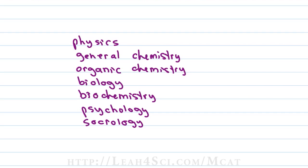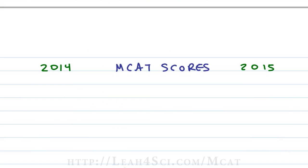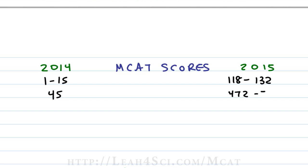The next important distinction is the scoring system. On the old exam, every section was scored between 1 and 15, with an average of about 9, and the total score was the sum of individual sections with a maximum of 45. The new exam is scored on a scale of 118 to 132 per section — ensuring the old and new exams can't be directly compared numerically. But if you do the math, 118 to 132 still gives you a 15-point scale. The new exam has an average of 125 per section, and the total score ranges from 472 to 528 with an average of about 500.